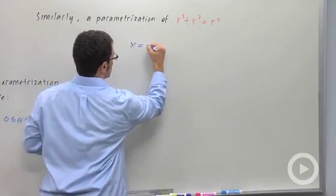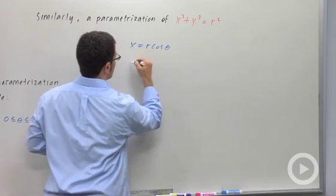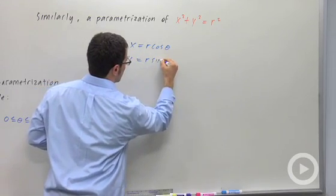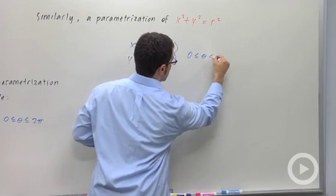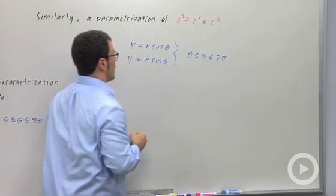All you have to do is x equals r cosine theta and y equals r sine theta. Same restriction. You at least need theta to go from 0 to 2π.